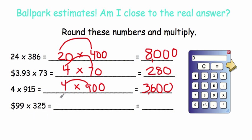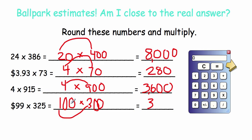Finally, $99 times 325. Round 99 up to 100, and round 325 down to 300. So 100 times 300 — one times three is three, then add four zeros. Ninety-nine dollars times three hundred and twenty-five is approximately thirty thousand.